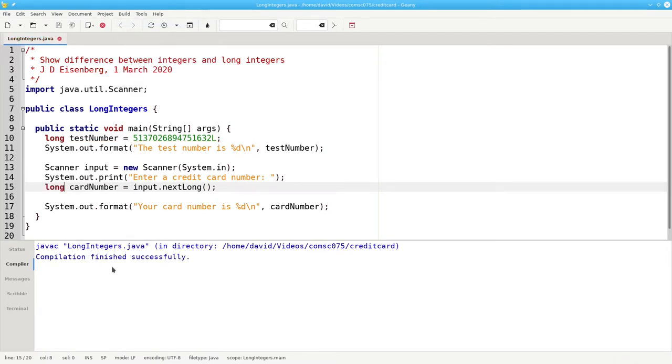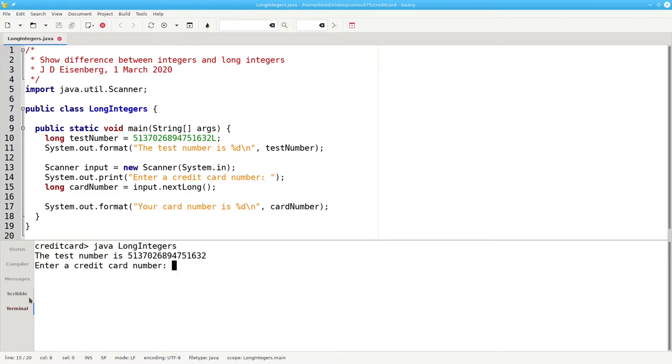Now it'll compile fine. And when we run the program, it prints out perfectly, and when the user enters a credit card number, it works fine. Users don't have to type a capital L at the end of the number. The next long method takes care of it for them.